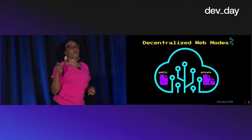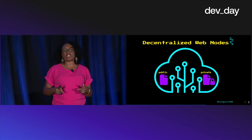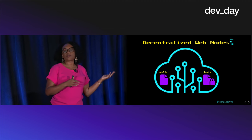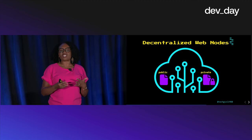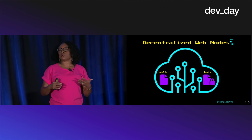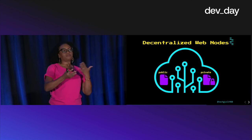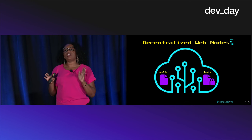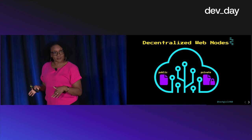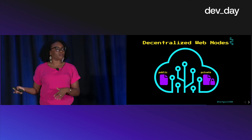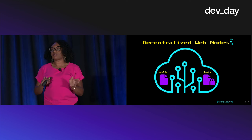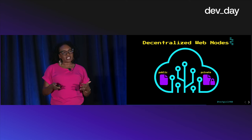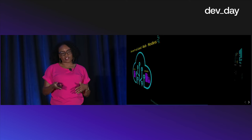Decentralized web nodes are capable of hosting both public data and private data. In the case of something like Blue Sky, you'll want things like your connections and tweets to be public, meaning any application can query and read this data. But things like your DMs you want to be private — encrypted — and only applications that you explicitly give permission to can read that information.